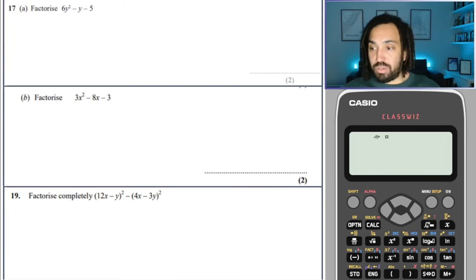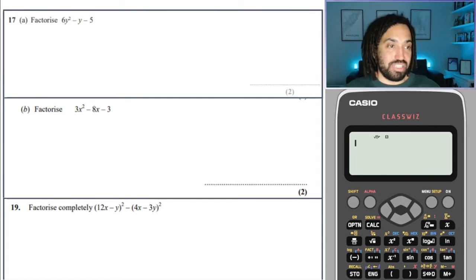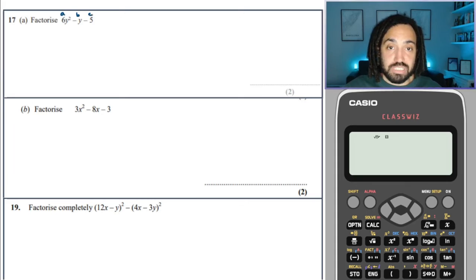Oh, here we go. This is the Mr. Packer method. When we have a x squared, or in this case a y squared, where the first term is not 1, the first term is 6. This is the best method for doing this. Just watch. So we know that's the a term, that's the b term, that's the c term. We do a times c, which is 6 times minus 5, which is minus 30.